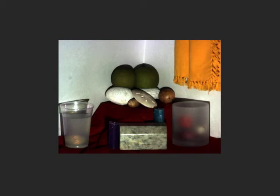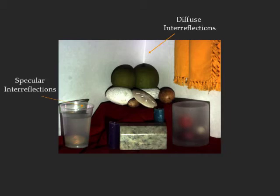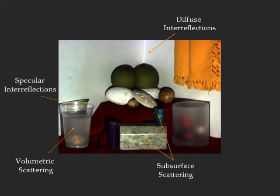Consider this complex scene. Strong global illumination effects arise due to diffuse interreflections between the white walls, specular interreflections within the plastic cup, volumetric scattering due to milky water, subsurface scattering in the candles and in the marble object, and translucency of the frosted glass.